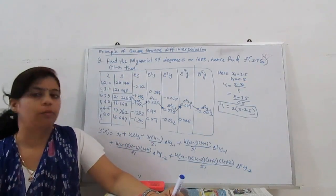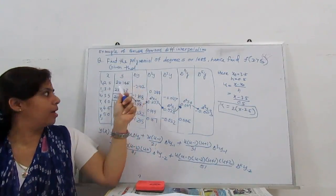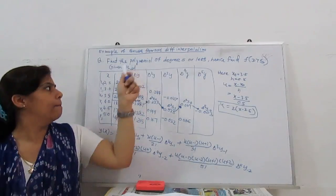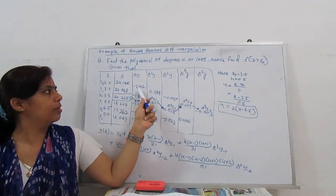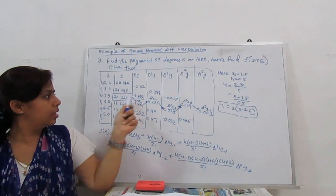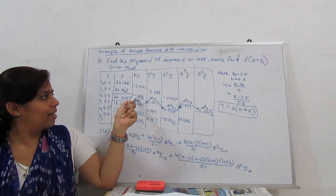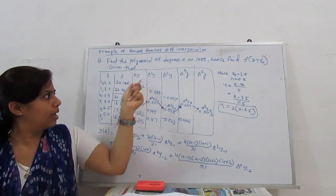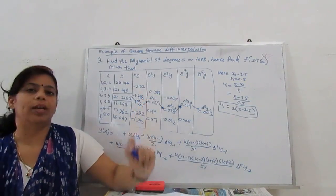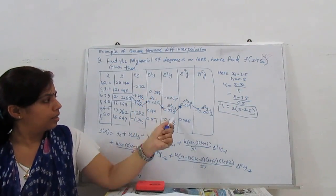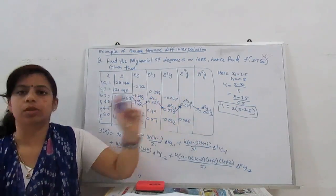First we construct the forward difference table. The forward table has columns del y and del square y. Lower value minus upper value: 22.043 minus 24.145 gives minus 2.102. Similarly, subtracting consecutive values gives all the first differences. Then for second differences: minus 1.818 minus (minus 2.102) gives 0.284, and so on for all remaining values.